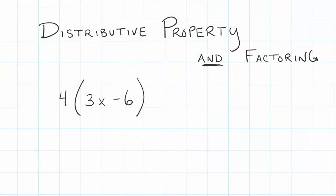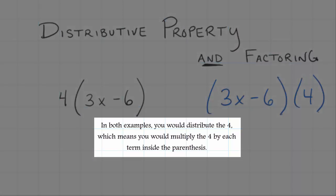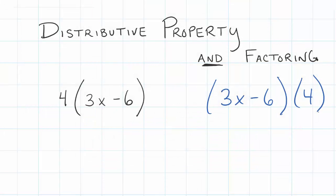I'm going to show you a distributive property question that we have right here in front of us. It could also be written, they try to disguise it sometimes, like 3x minus 6 first and then they might put the 4 in parentheses behind it. But these mean the same thing - we're distributing the number 4 to the terms inside of the parentheses.